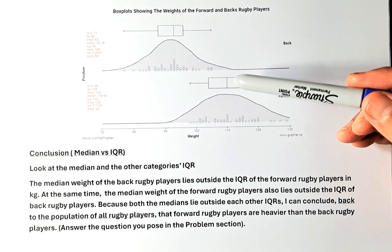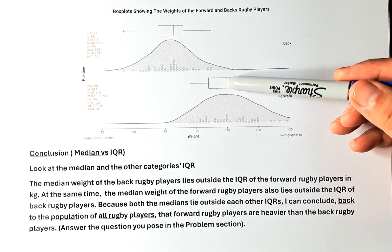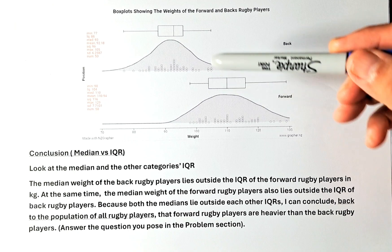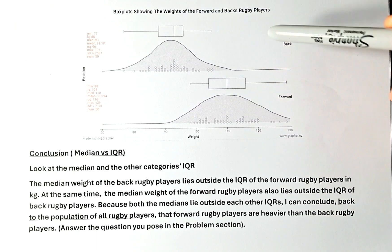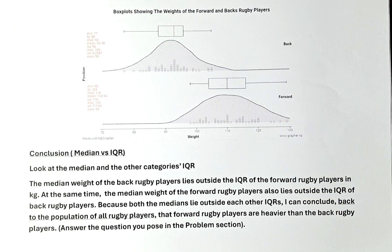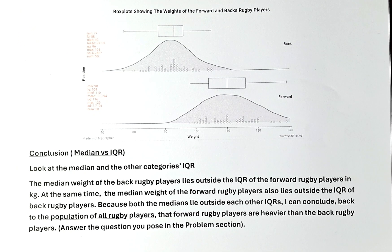At the same time, the median of the forward rugby player also lies outside the IQR of the back rugby player. Because both medians lie outside each other's IQR, you need to say — this is important — back to the population. You must say 'back to the population' because you don't know; otherwise you may not get full marks.